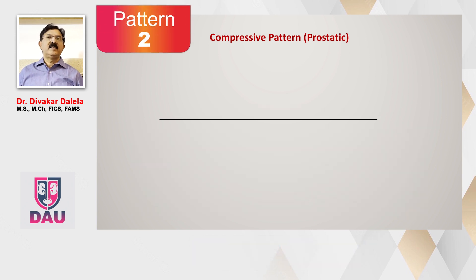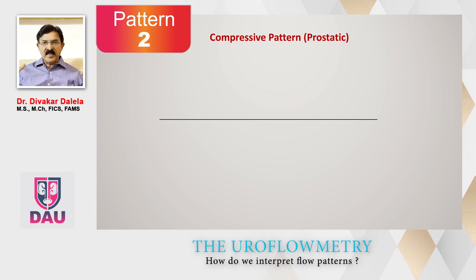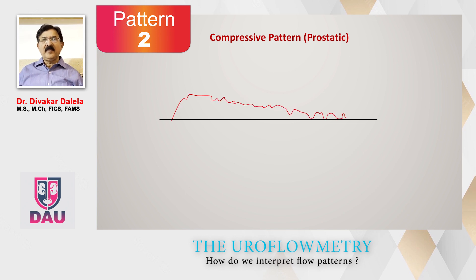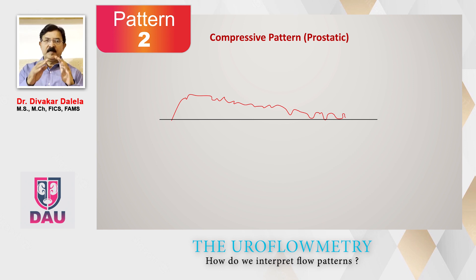The second pattern is known as the compressive pattern, also called the prostatic pattern. By compression, we mean the urethral lumen is being compressed by something from outside — a common example is BPH. Here as the patient voids, the ascending part of the graph is rather acute and short-lasting, the peak is reached quickly, and then the descending limb of the graph is very long. This is characteristic of a compressive pattern.